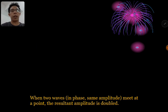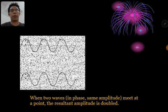So when two waves that are in phase and same amplitude meet at a point, the resultant amplitude is doubled.